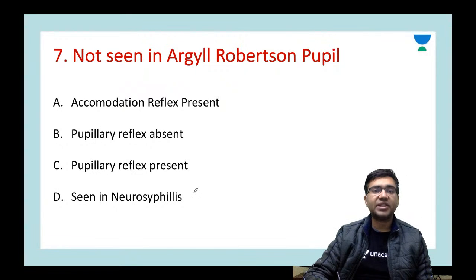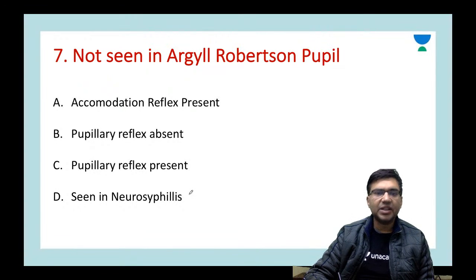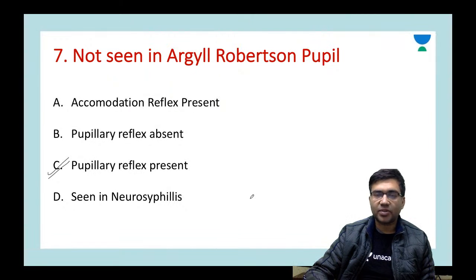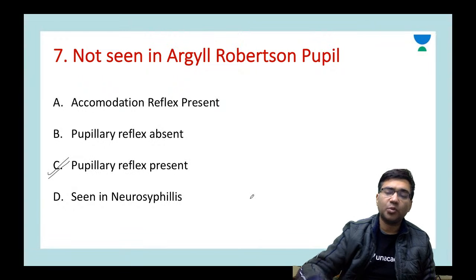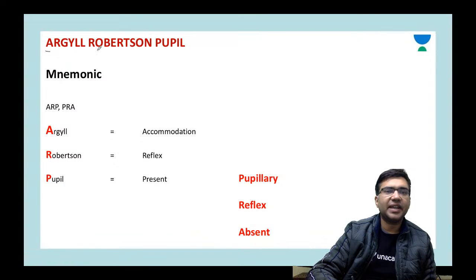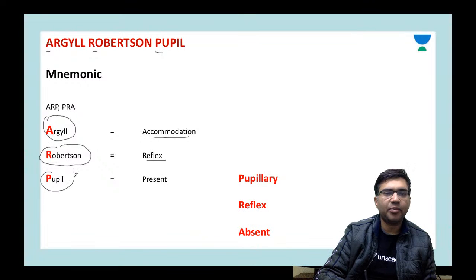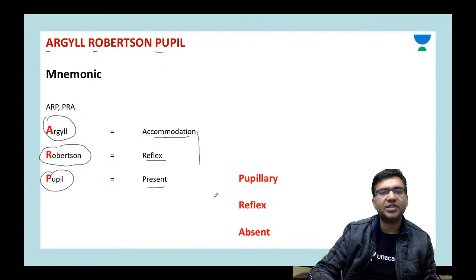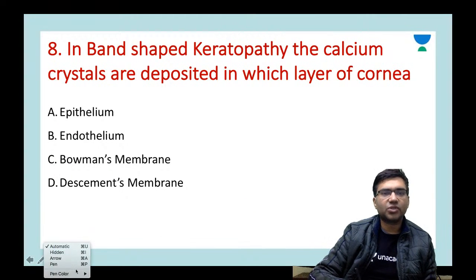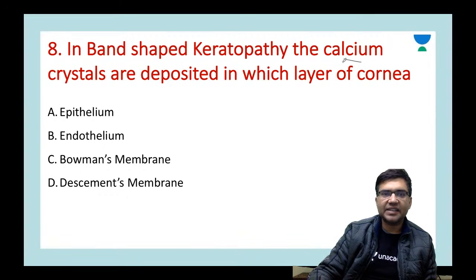Next question: what is NOT seen in Argyll Robertson pupil? Options: accommodation reflex present, pupillary reflex absent, pupillary reflex present, or seen in neurosyphilis. The answer is C — pupillary reflex present. In Argyll Robertson pupil, the pupillary reflex is absent. Remember mnemonic ARP-PRA: Argyll, accommodation, Robertson — reflex and pupil are present. If you reverse it, pupillary reflex is absent.